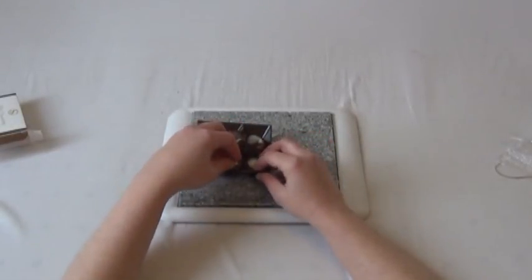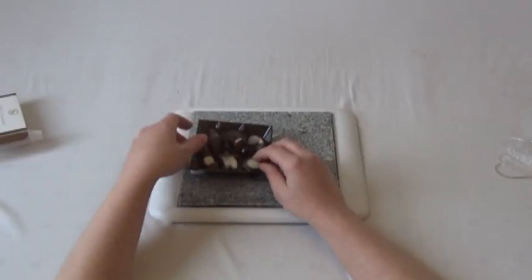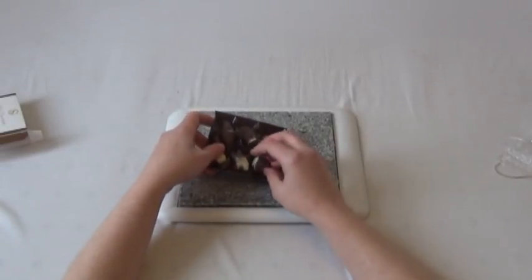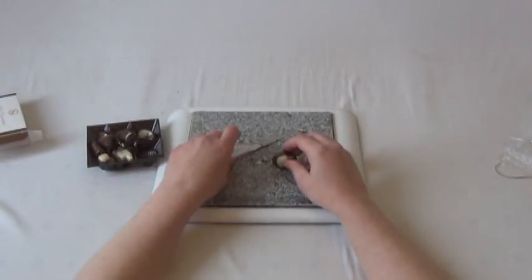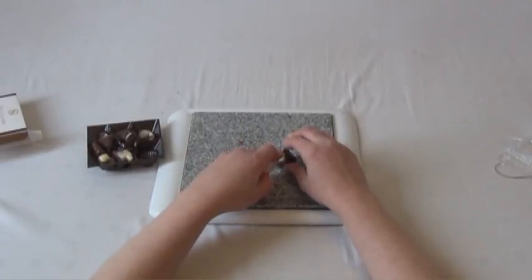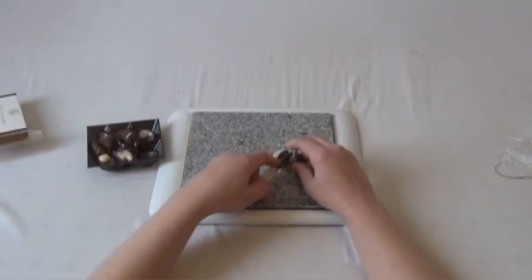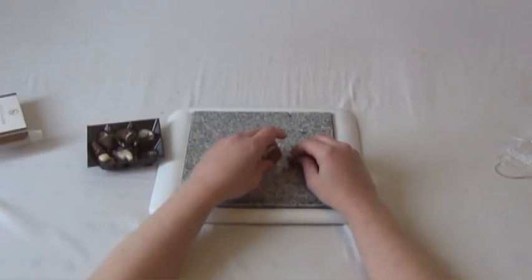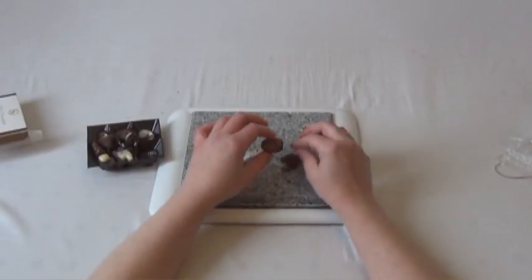The hazelnut filling in the middle with the rind being a white and a dark chocolate. Once again, you can tell these are not the Belgian chocolates, the seashell Belgian chocolates. They're a knockoff, but at the same time they are still quite good in their own right.